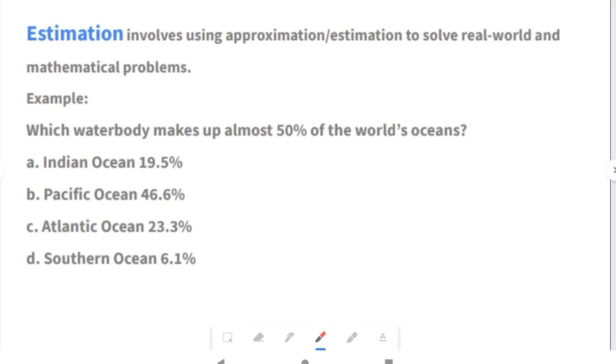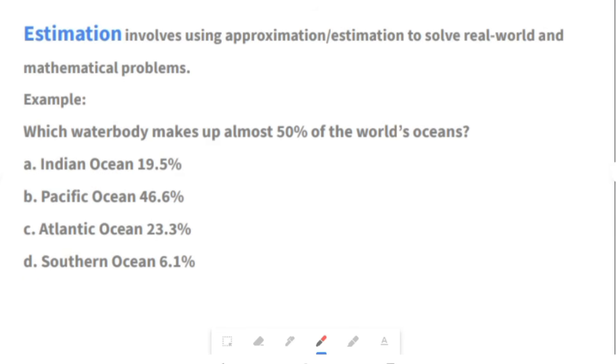Estimation involves using approximation to solve real world and mathematical problems. The example reads, Which water body makes up almost 50% of the world's oceans? Option A. Indian Ocean, 19.5%. Option B. Pacific Ocean, 46.6%. Option C. Atlantic Ocean, 23.3%. Option D. Southern Ocean, at 6.1%. You would have to ask yourself, which of these options are closest to 50%? If you observe closely, the only option that is close to 50% is Pacific Ocean, at 46.6%.